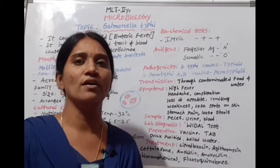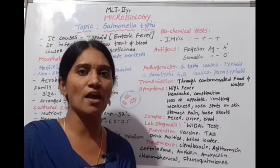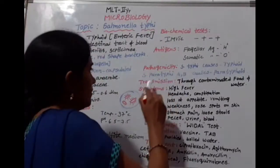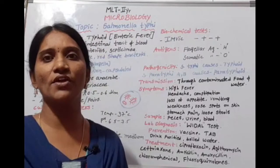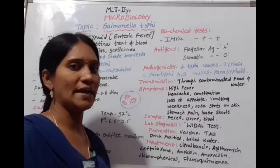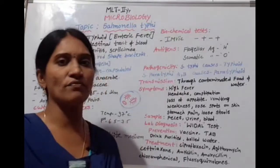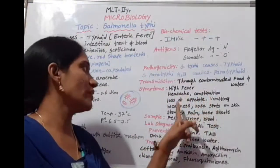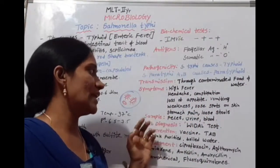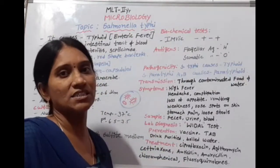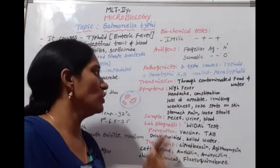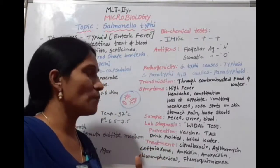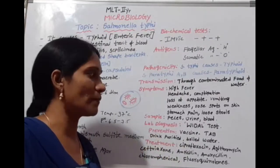Salmonella typhi causes typhoid, and Salmonella paratyphi A and B causes paratyphoid. Transmission of the disease occurs through contaminated food and water. Symptoms of typhoid fever include: high fever, headache, constipation, loss of appetite, vomiting, weakness, rose spots on the skin (pink-colored rashes), stomach pain, and loose stools.